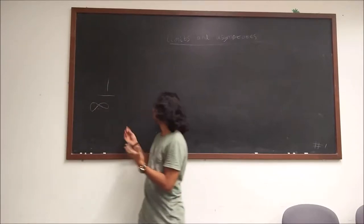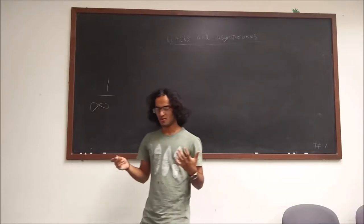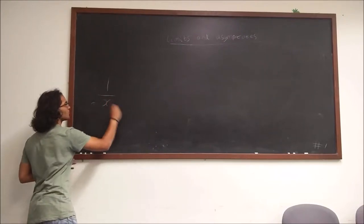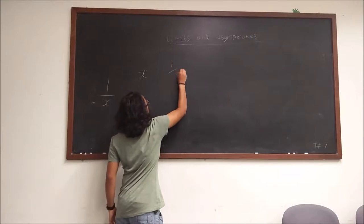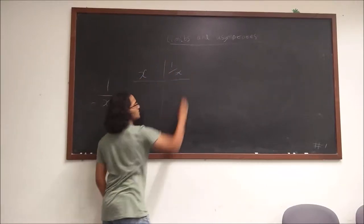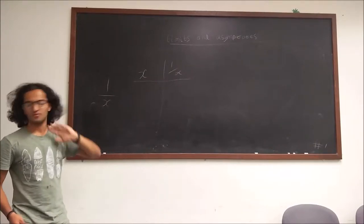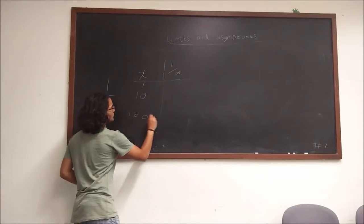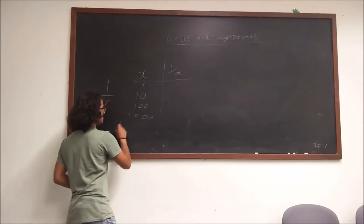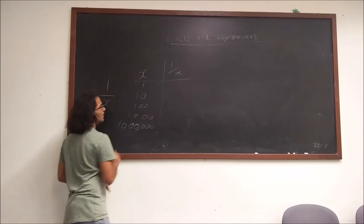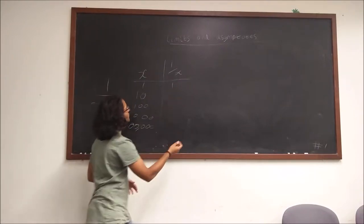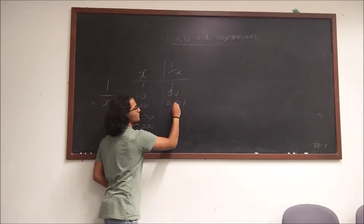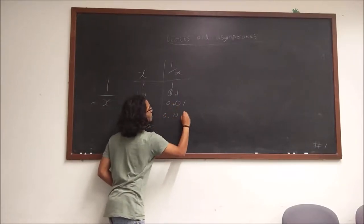But the issue now arises — can we do something with this 1 over infinity? What I'm going to do is plot a table of how it behaves. So if we treat this as 1 over x, we have x and 1 over x. Going up in values — 1, 10, 100, 1000, a million — 1 over x gives us 1, 0.1, 0.01, 0.001, and so on.